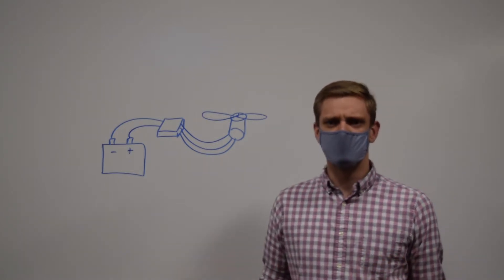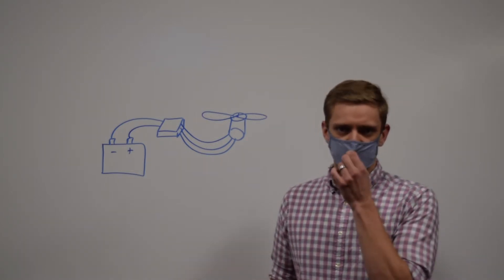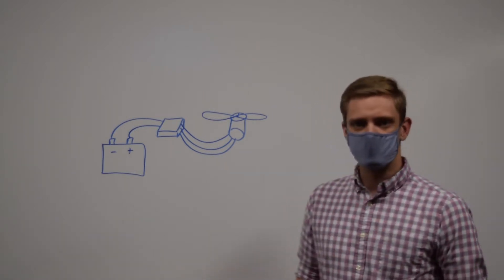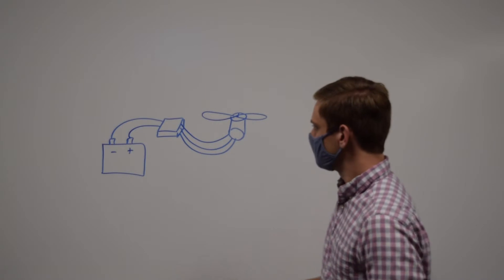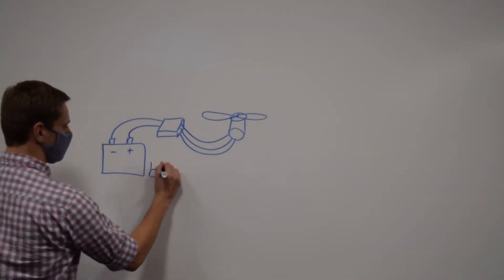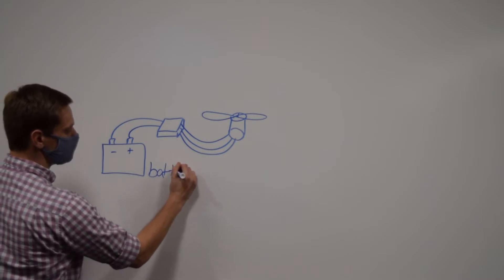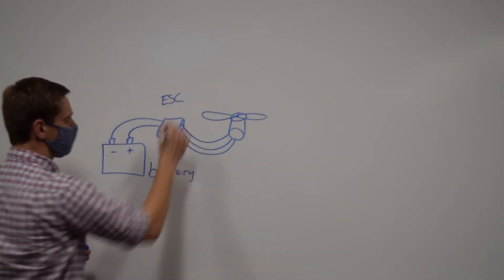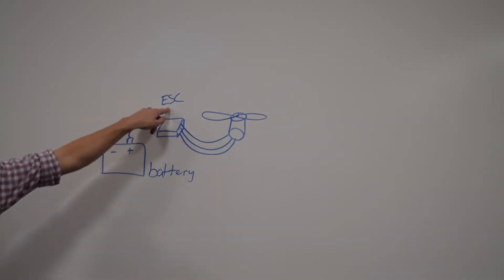The systems that we will typically use on smaller scale systems often use brushless motors. The setup that you'll see for these brushless motors in order to run it is you have a battery, you have an ESC, which stands for electronic speed controller. We'll get into those a lot more on the electronics portion.